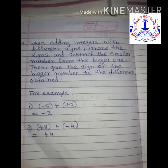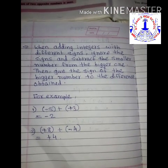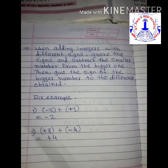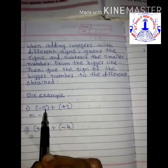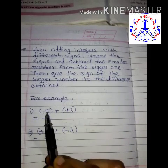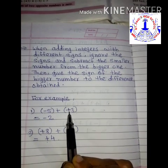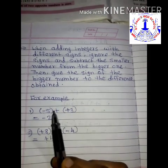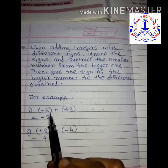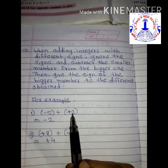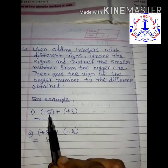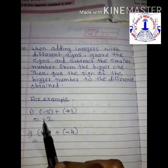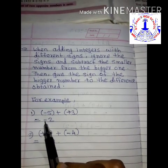In the first example, minus 5 plus plus 3 is given. Minus 5 and plus 3 both have different signs — 5 has a negative sign and 3 has a positive sign. In that case, subtract the smaller number from the bigger number. Smaller number is 3, bigger is 5, so 5 minus 3 is 2. Give the sign of the bigger number, which is minus, so the answer is minus 2.